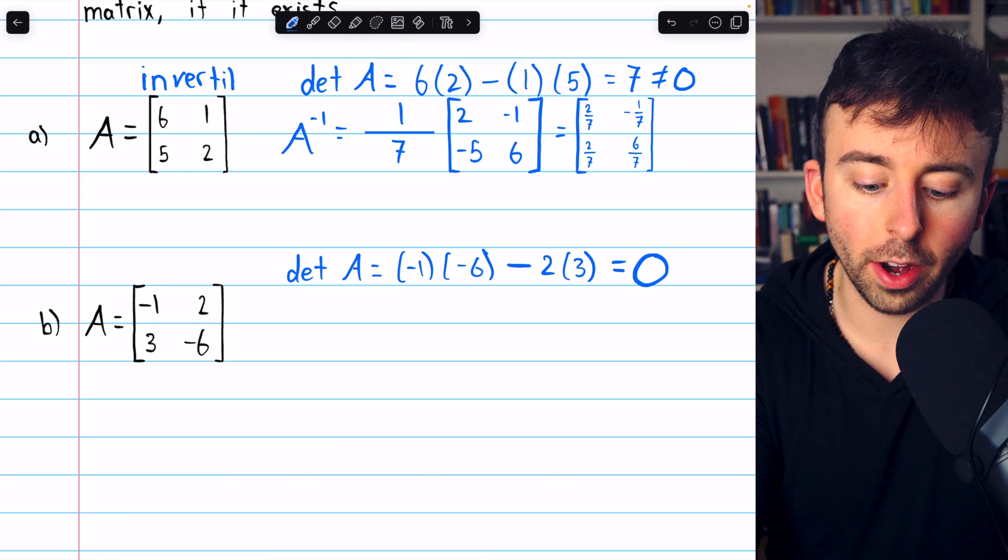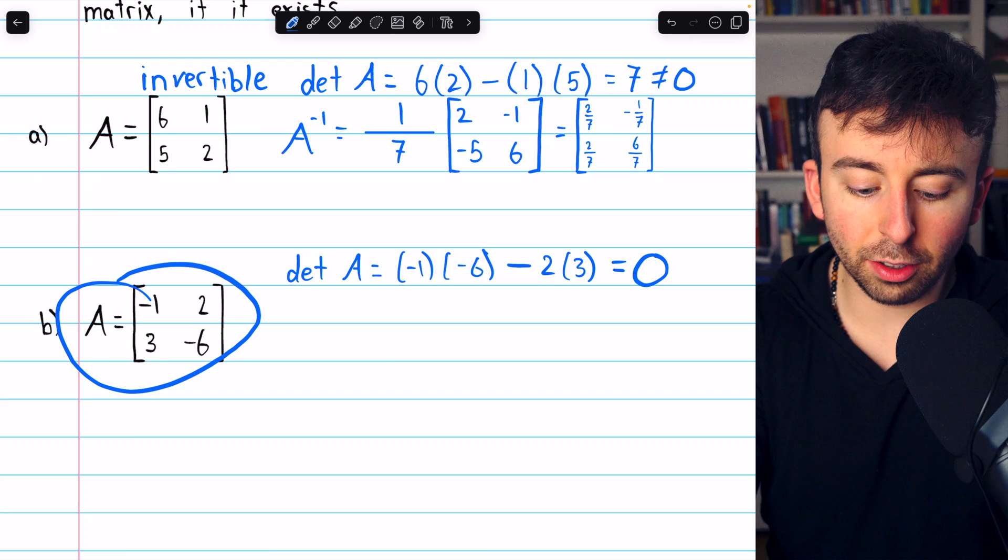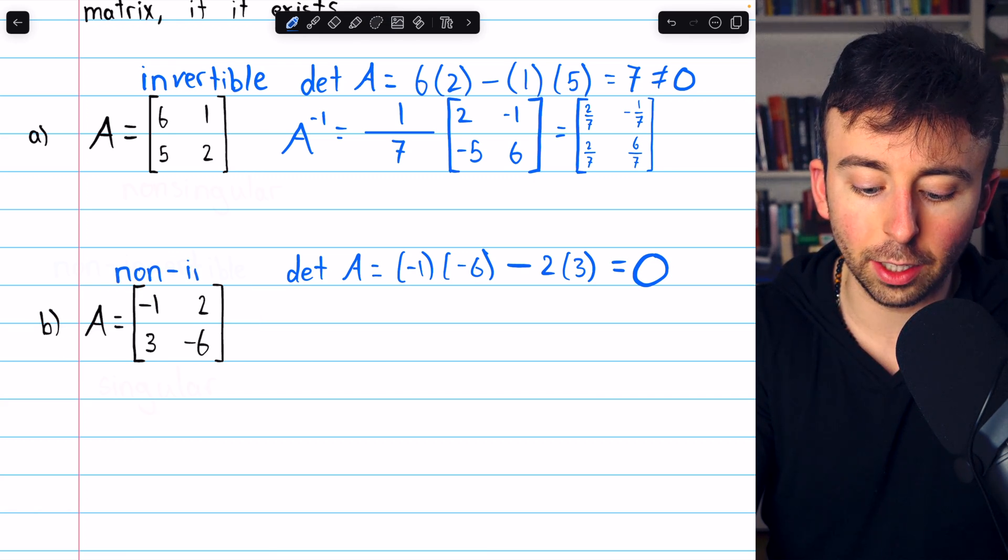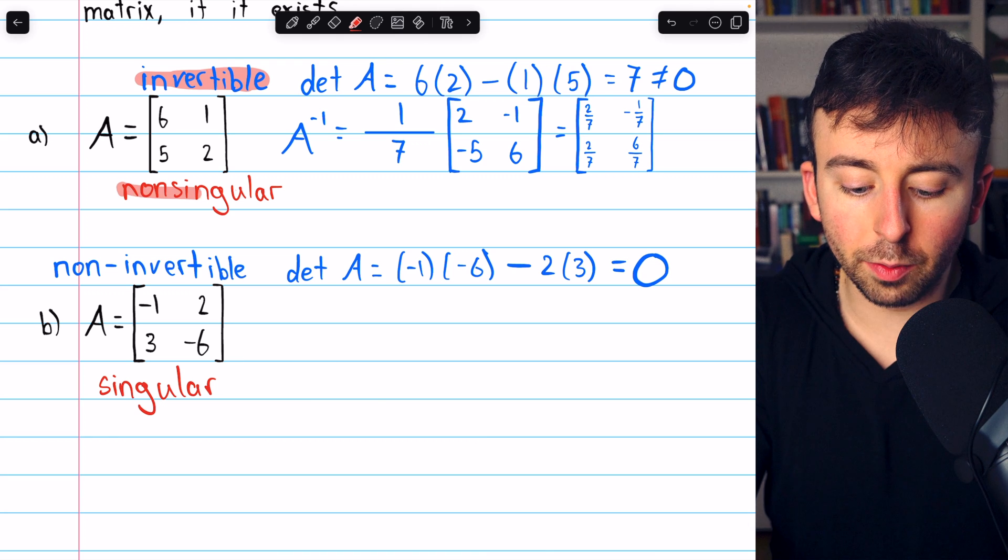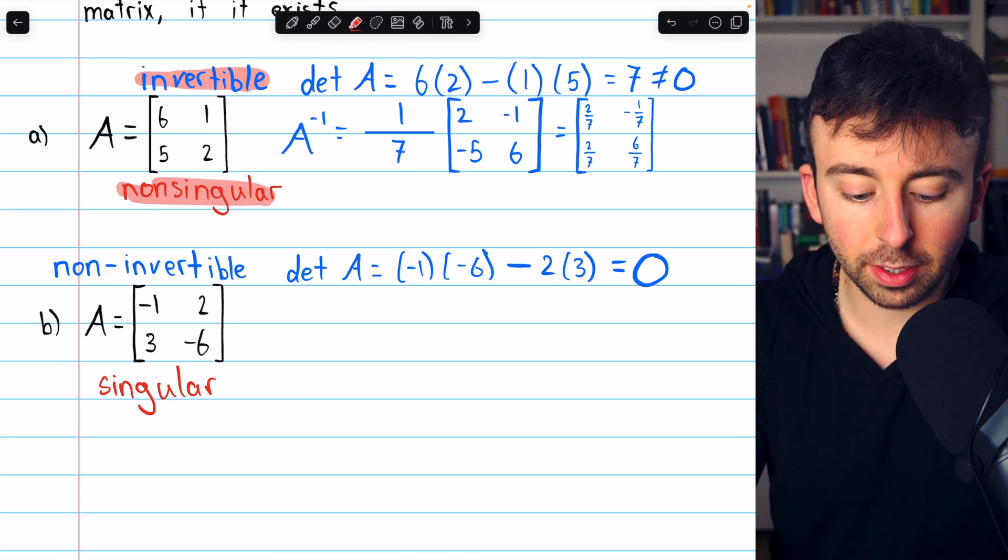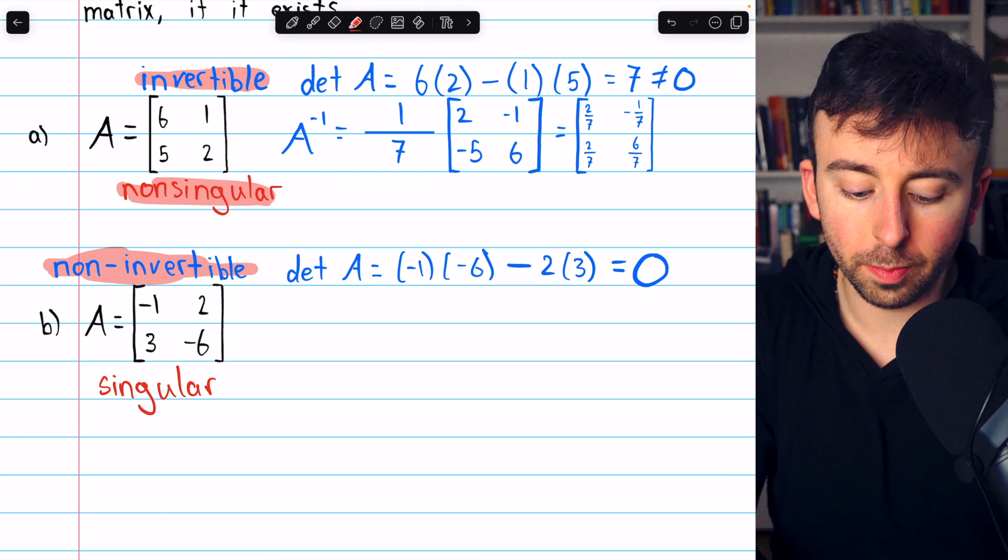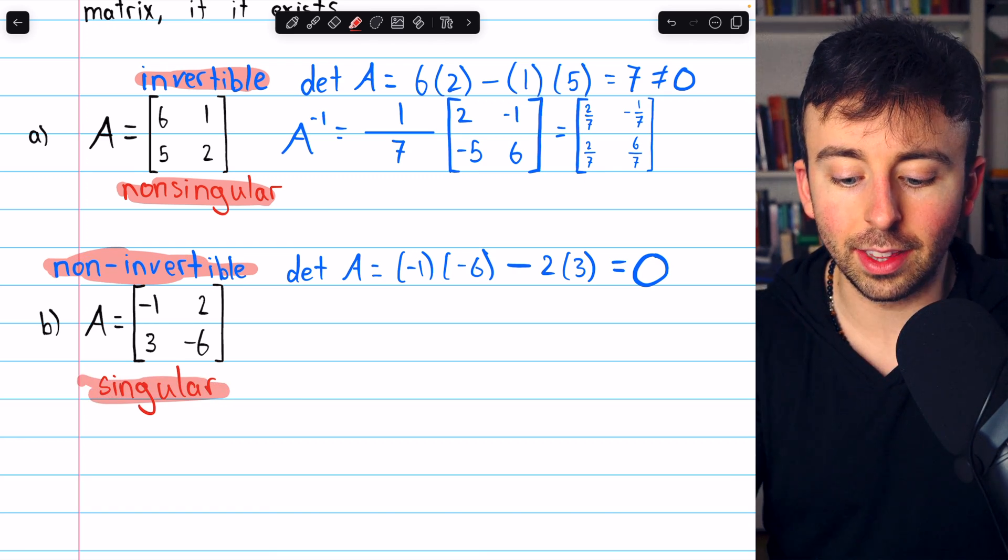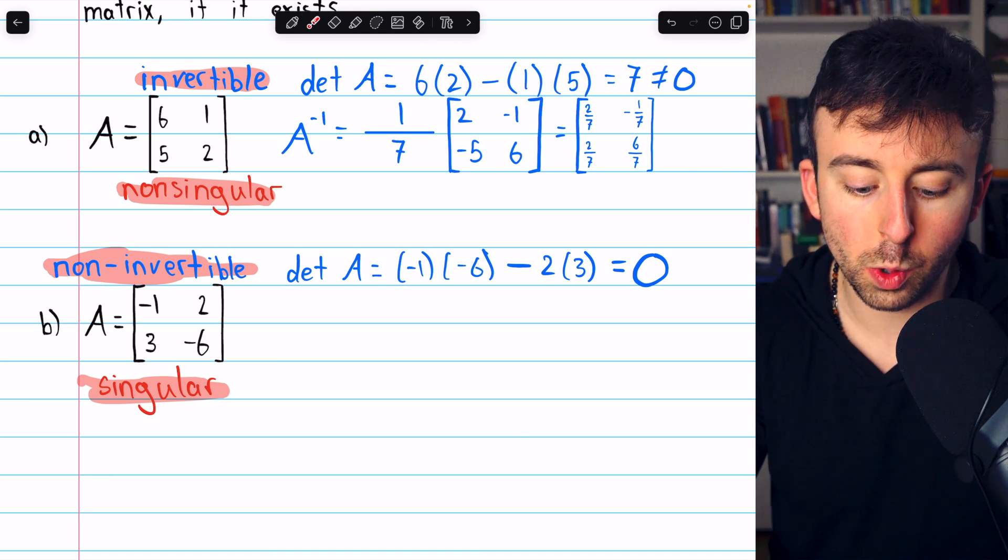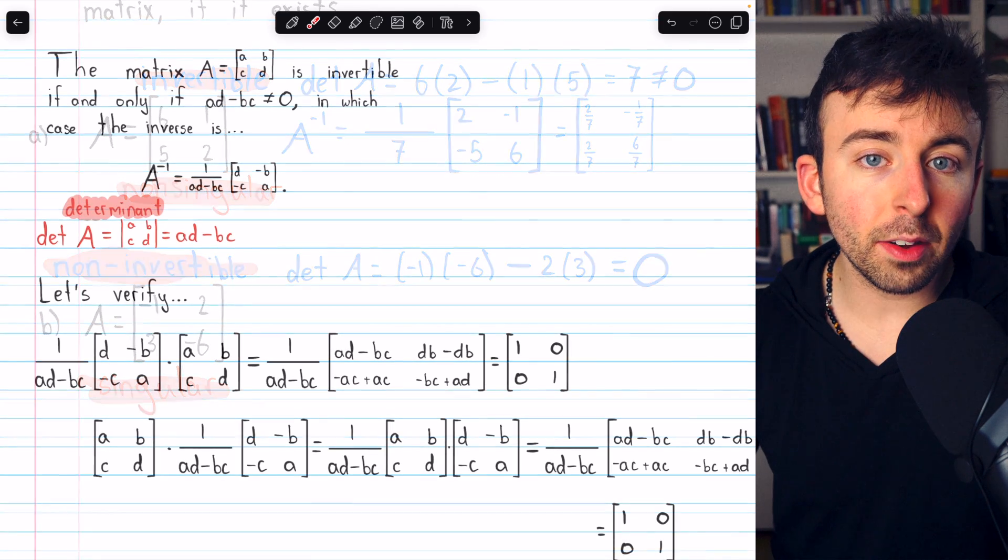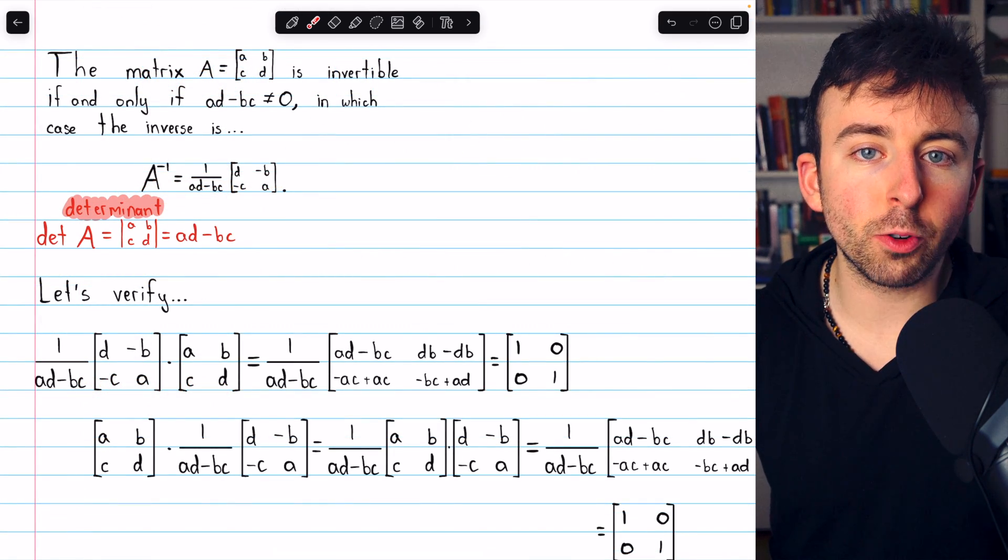So this first matrix that we worked with was invertible. We would also call this non-singular. Whereas this matrix is non-invertible. We would also call it singular. Invertible and non-singular both mean that a matrix has an inverse. Whereas non-invertible or singular mean that the matrix does not have an inverse. In this case, we know that's true about this matrix because its determinant is 0. So, no inverse.